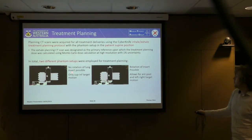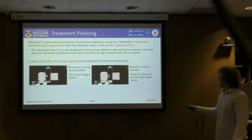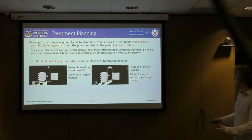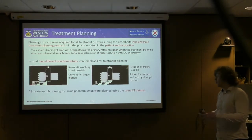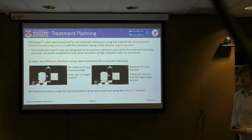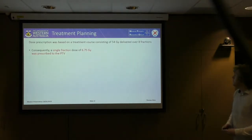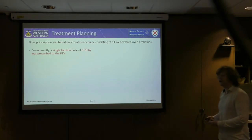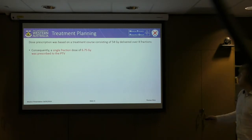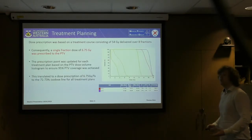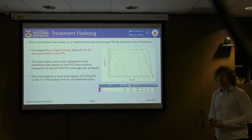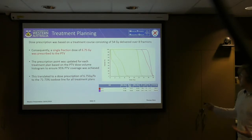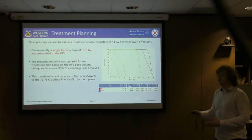In total, we used two different phantom setups. The first did not allow rotation of the lung insert, so there was only target motion in the superior-inferior direction. The second setup allowed rotation, capable of simulating anterior-posterior and left-right target motion as well. All treatment plans for the same setup used the same CT dataset for comparability. The dose prescription was 54 Gray delivered over eight fractions, giving a single fraction dose of 6.75 Gray to the PTV, prescribed to the 71 to 73% isodose line to ensure a minimum of 95% PTV coverage.